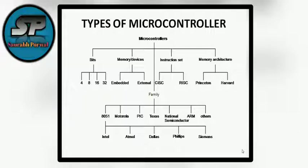Depending upon the memory architecture: in Princeton architecture, both the program memory and data memory are in a single block, while in Harvard architecture, we have different memories for program and data.